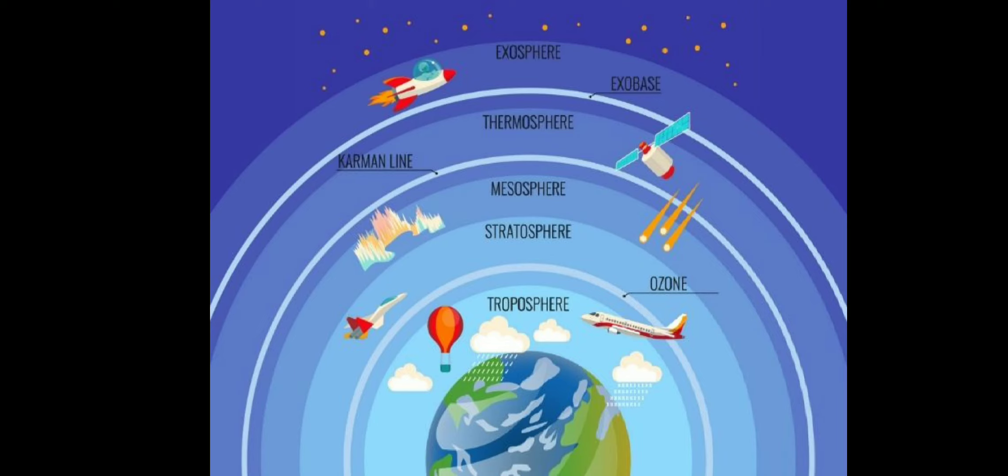All animals and plants live in the lowermost layer of the atmosphere called the troposphere. All weather phenomena take place in the troposphere.